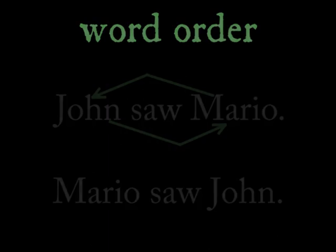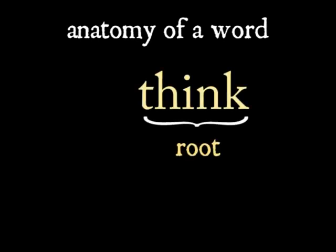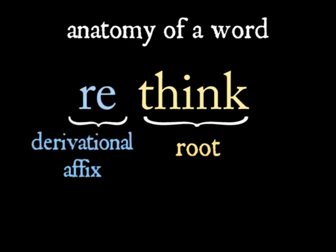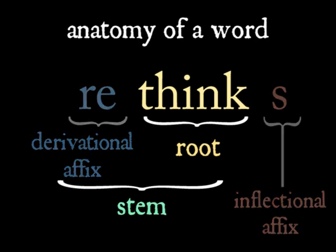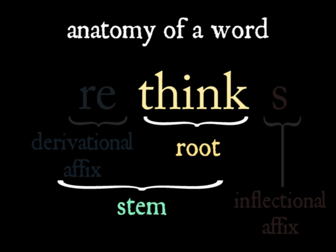We have some additional terminology for talking about languages that like to bind morphemes. The root morpheme is the base that carries most of the meaning. Any derivational morphemes added to the root would help form the stem, to which affixes can be added. Inflectional affixes would not be part of the stem, but any derivational affixes and the root itself would be. If it's on its own, it's both the root and the stem.